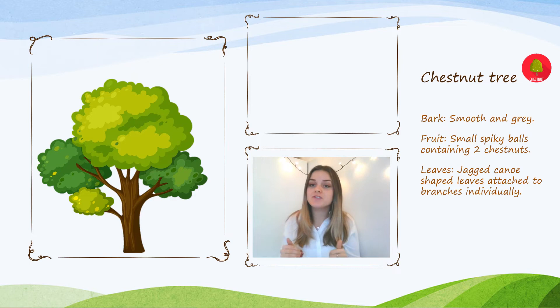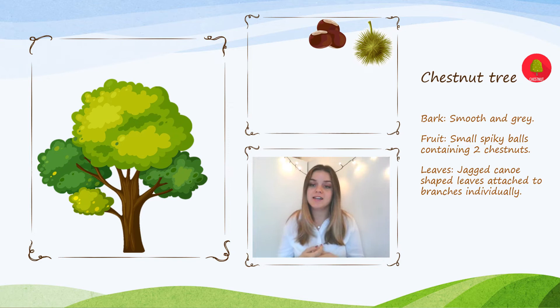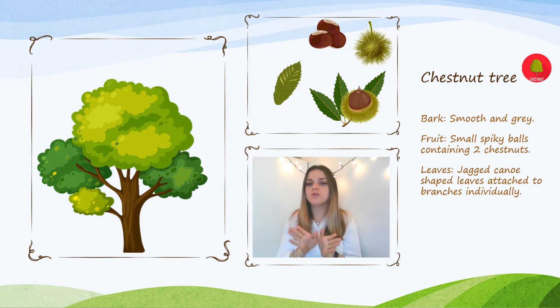The chestnut tree is a big, strong kind of tree with very smooth gray bark. It grows special green spiky balls where its fruit develops — the seeds are chestnuts, which some people like to roast around Christmas time as a festive snack. The leaves are quite long, almost in the shape of a canoe, getting narrow towards the ends and slightly spiky around the edges. They grow individually, meaning each leaf is separately attached to the branch and not clubbed together like we've seen in some other trees.